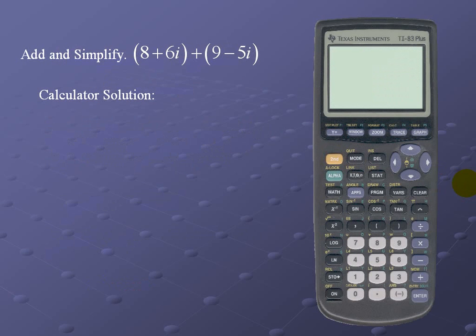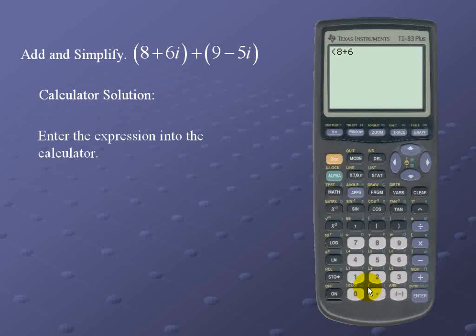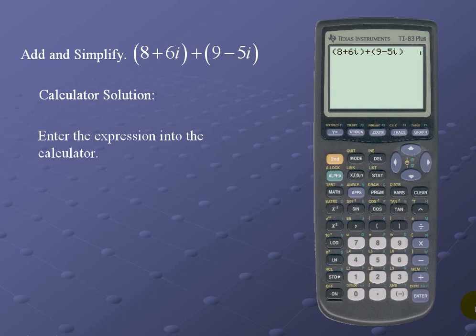Let's look at the calculator solution. We'll simply enter the expression exactly as we see it: beginning parenthesis (8 + 6i). Notice that the i is above the decimal point and it's yellow, so it's second then decimal point. Close the beginning parenthesis, then add (9 - 5i), for a result of 17 + i.